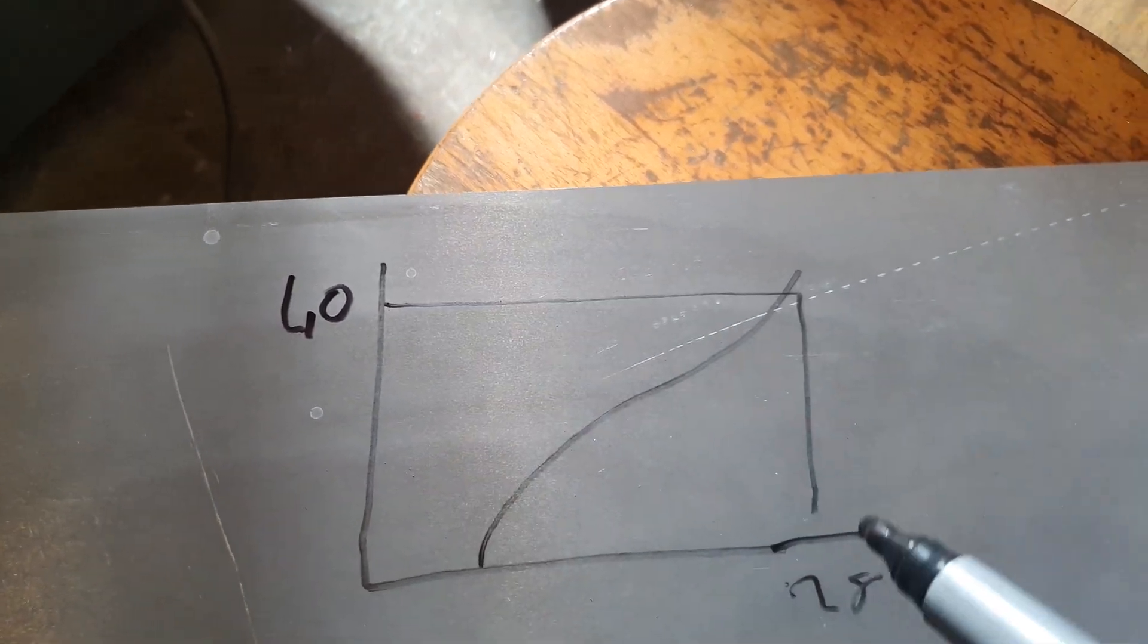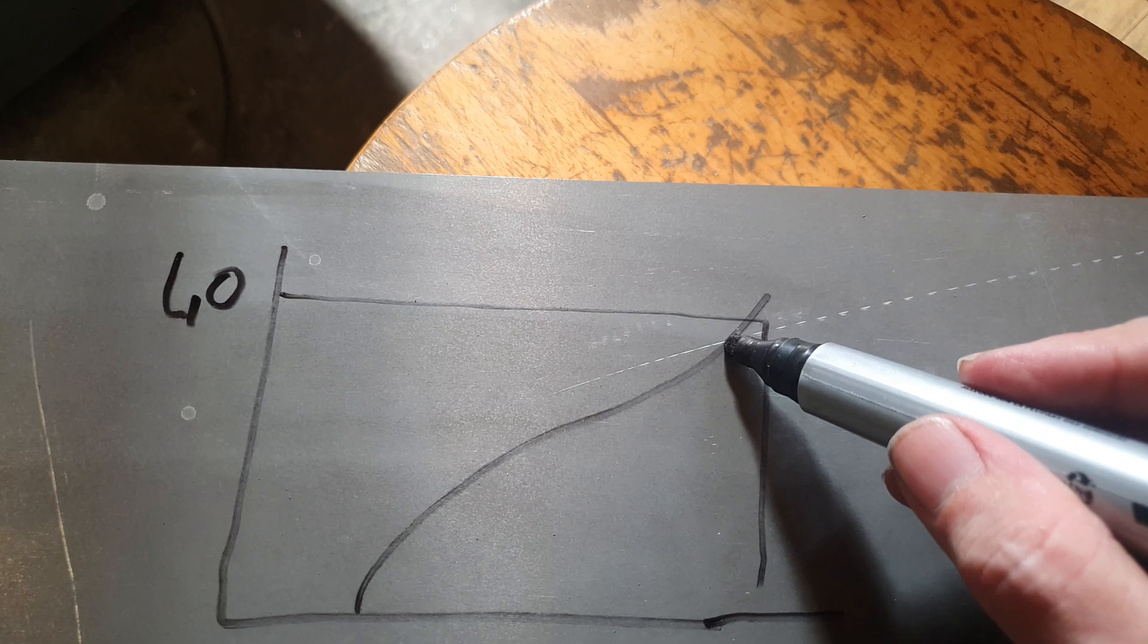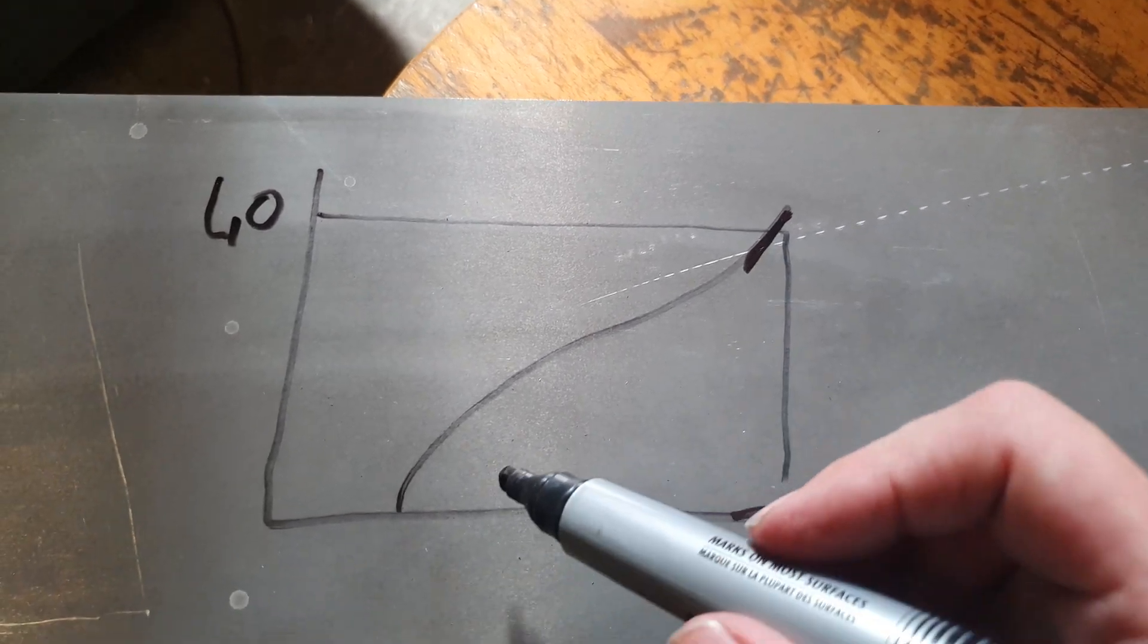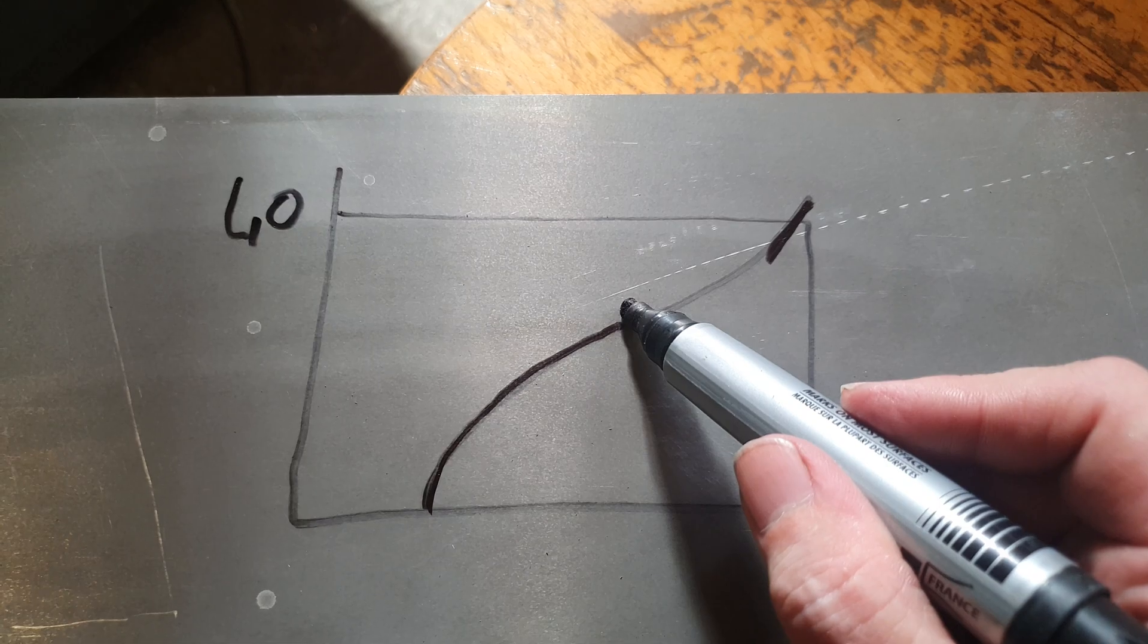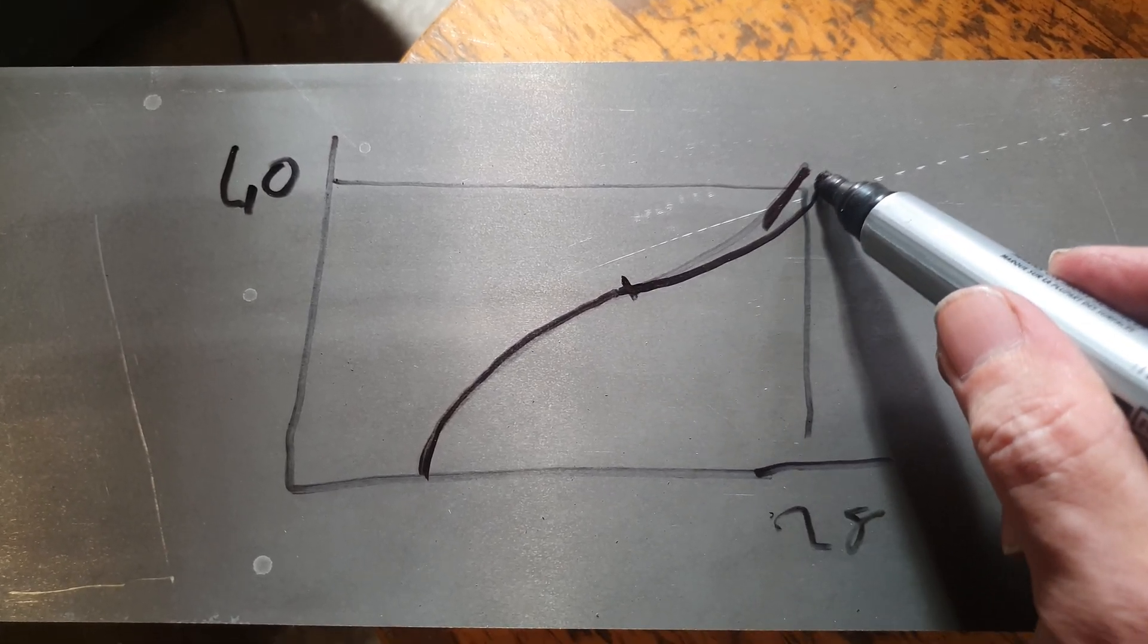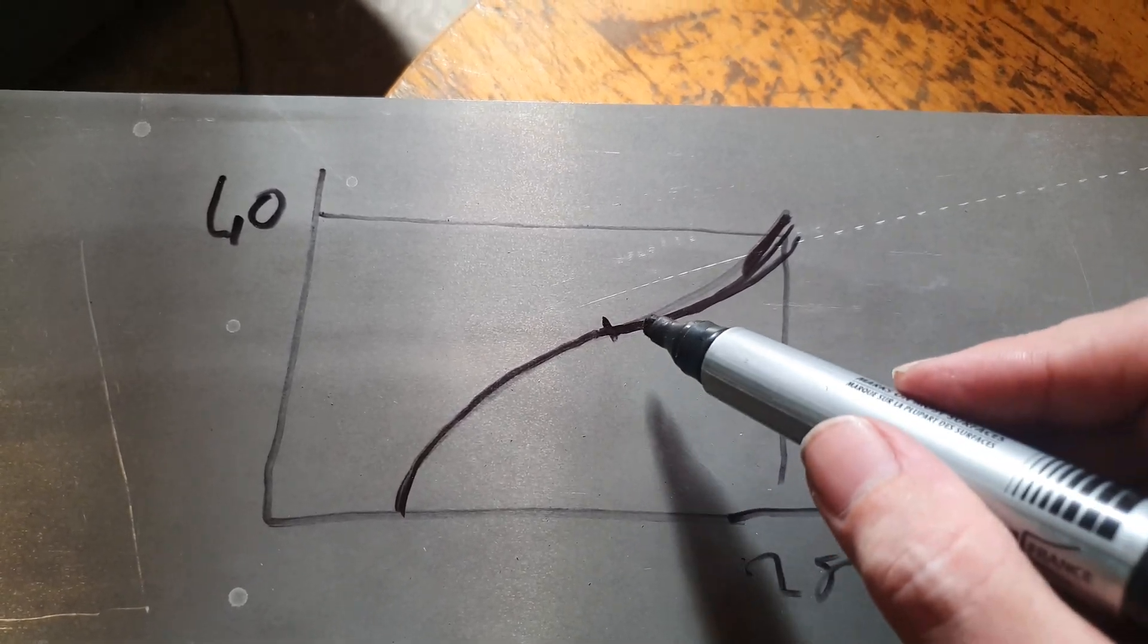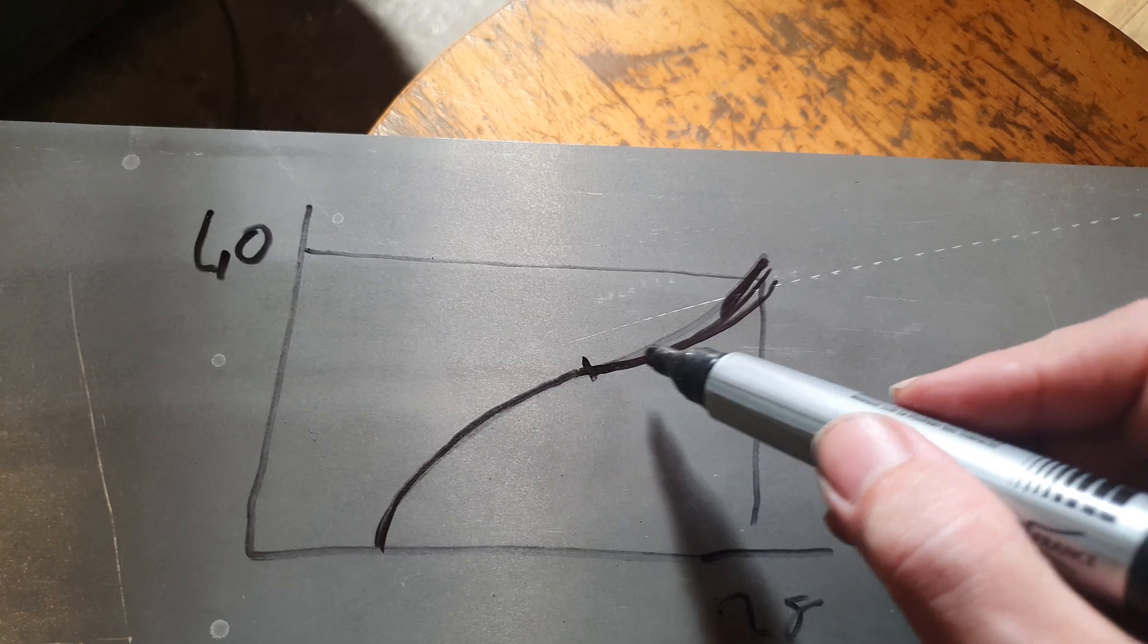Okay, so 40 pounds at 28 inches gives you this part here. Now this bulge here is preload, and then it changes to going inverted and goes into what's called stack.